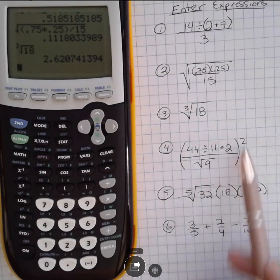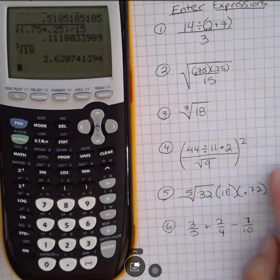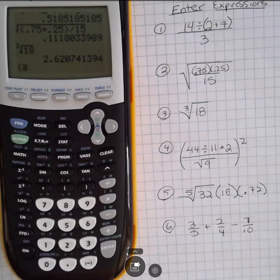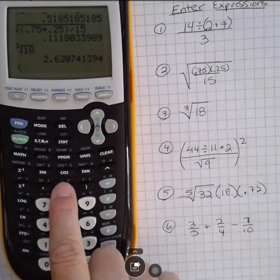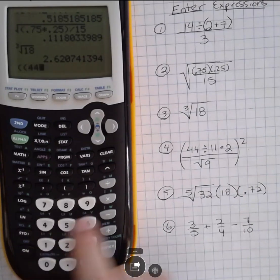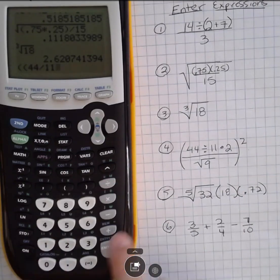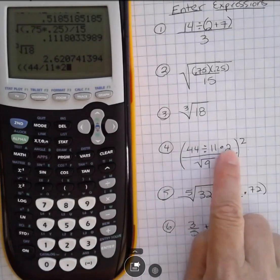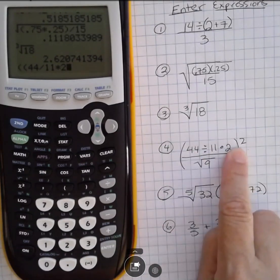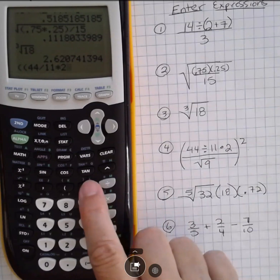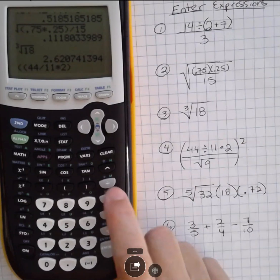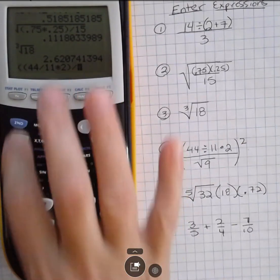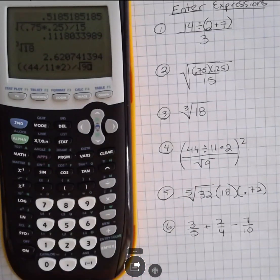In this one we have a lot of things going on, but we want to take the entire thing to the second power. So I want to start by having a parentheses, and then I have this numerator. That's another set of parentheses for me. So parentheses 44 divided by 11 times 2. I'm not putting the second set of parentheses up here because I just want to work that left to right, so I don't want to include anything else. Then I'm going to end my parentheses. That's the top, and now I'm going to divide by a square root, second function x squared, of nine, which we know is three. And now I want to put another parentheses.